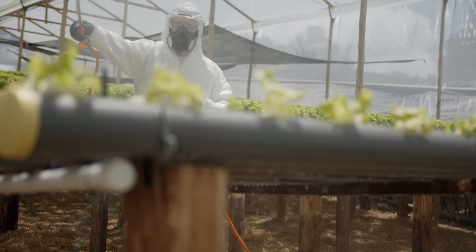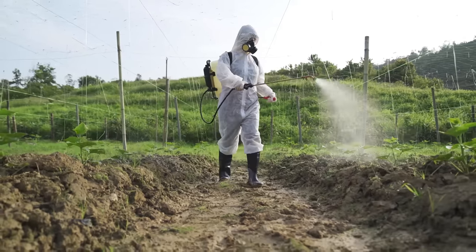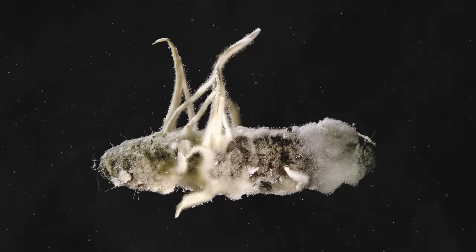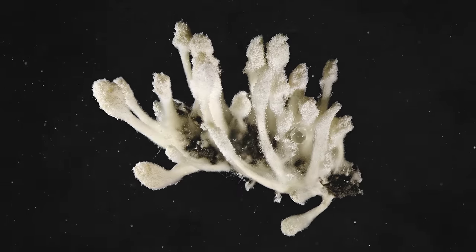Beauveria bassiana is so good at wiping out certain types of insects, it's actually used as a biological insecticide to control bugs like termites, aphids, and beetles. It's safe to say Beauveria bassiana behaves brutally, but as far as entomopathogenic fungi go, it's actually one of the friendliest.